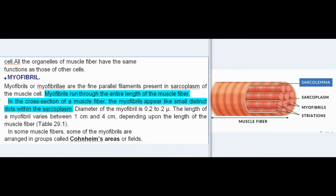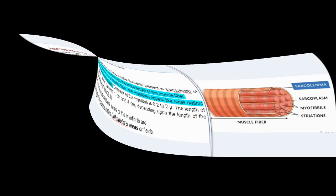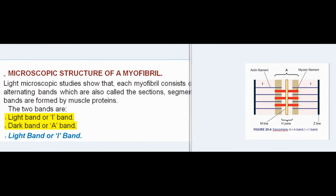Microscopic Structure of a Myofibril: Light microscopic studies show that each myofibril consists of a number of two alternating bands which are also called the sections, segments, or discs. These bands are formed by muscle proteins. The two bands are: light band or I band, dark band or A band.